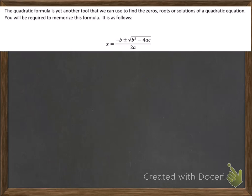So I learned a really cute way to memorize this. So it goes like this. A negative boy couldn't decide whether to go to a radical party. But he was square, so he missed out on 4 awesome chicks. The party wasn't over until 2am. So you can use that cute little story to help you memorize this equation.